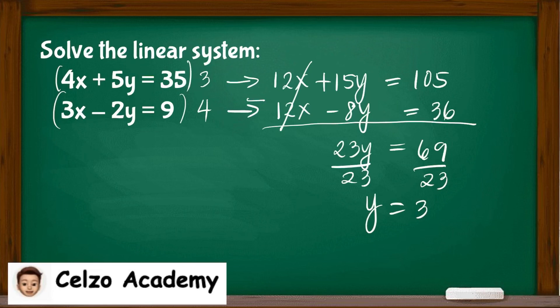To solve for x, we need to substitute y = 3 into either the first or second equation. I will use the second equation. So 3x - 2 times y, which is 3, equals 9. So now we have 3x - 6 = 9.